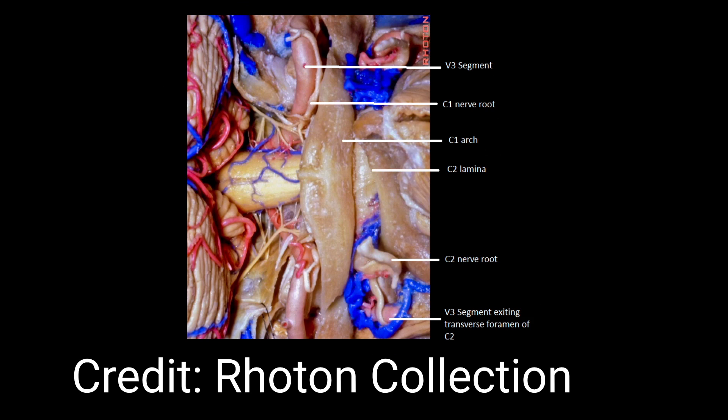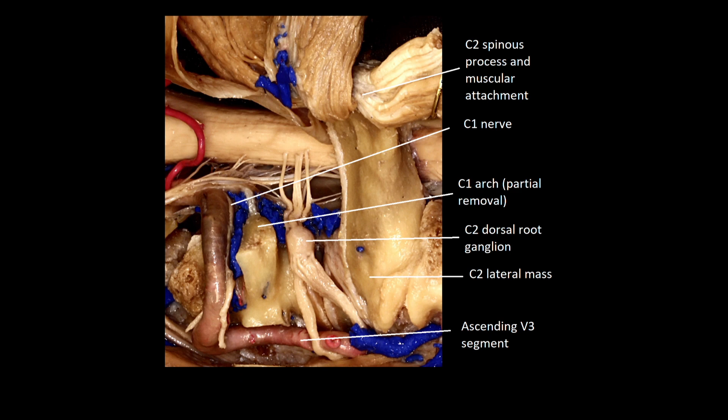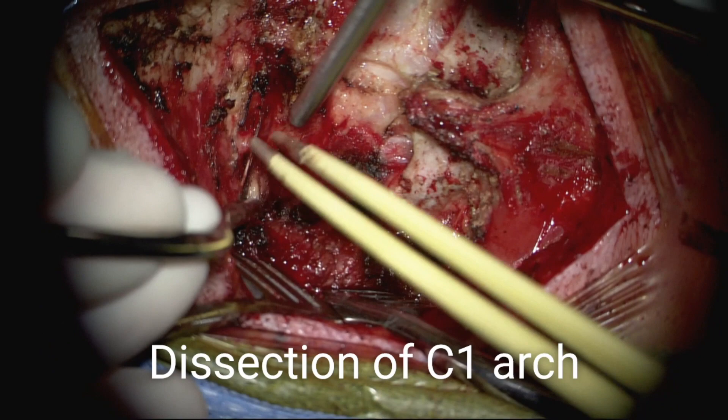Here is an anatomic depiction of the V3 segment in relation to C1 and C2 from a midline perspective. From a more lateral perspective, the relationship of the ascending V3 segment between C1 and C2 is appreciated, as is its close relationship to the C1 and C2 nerve roots.